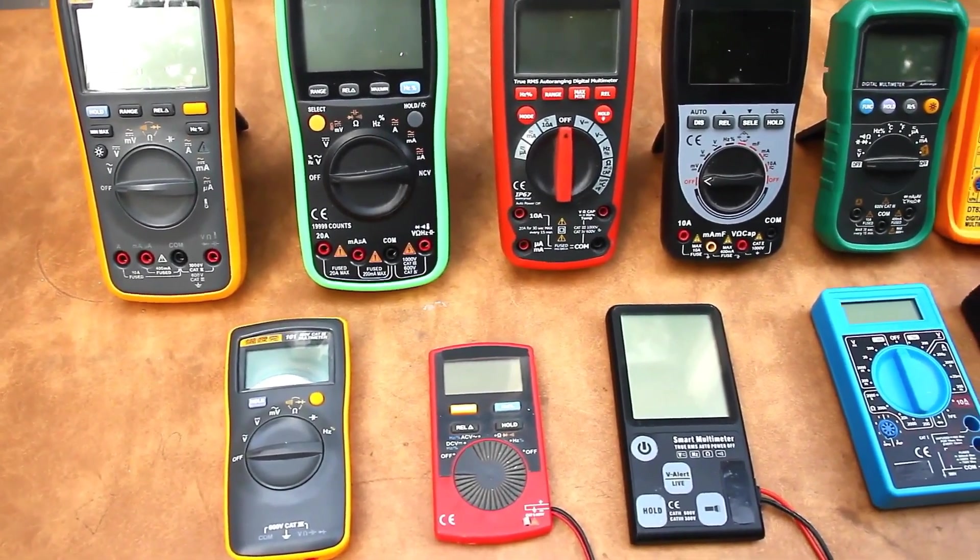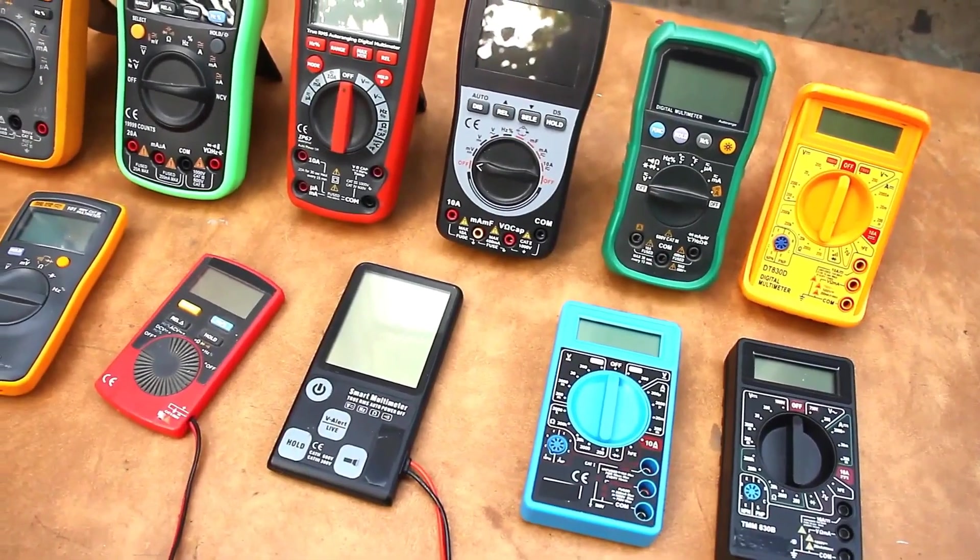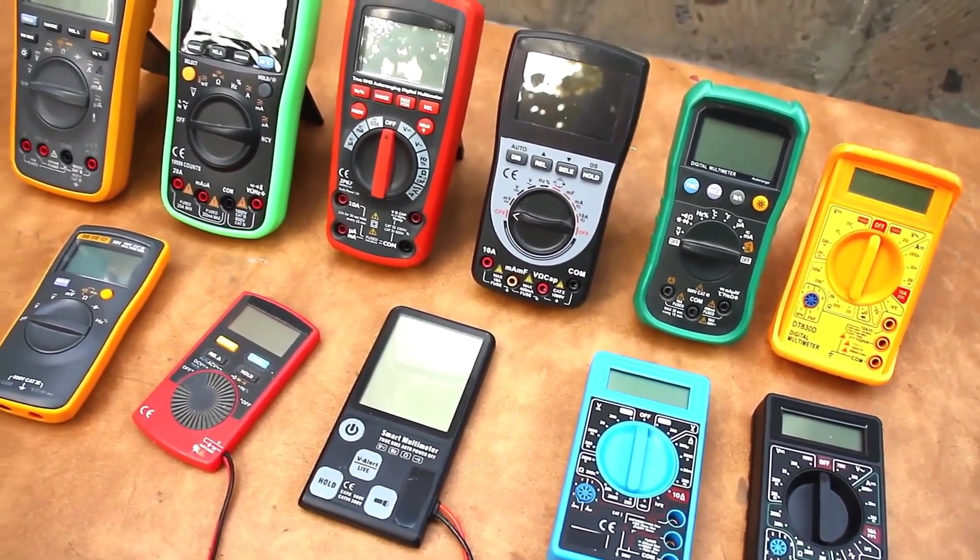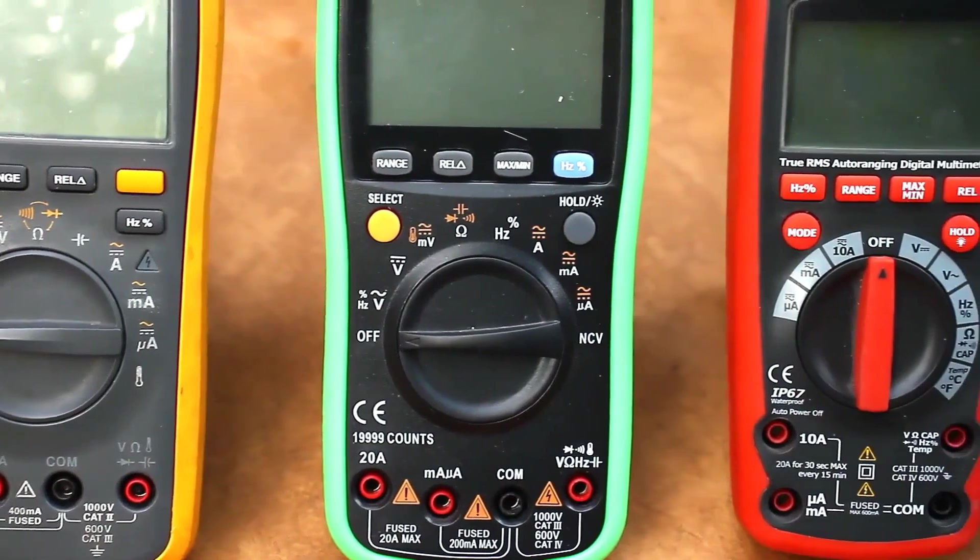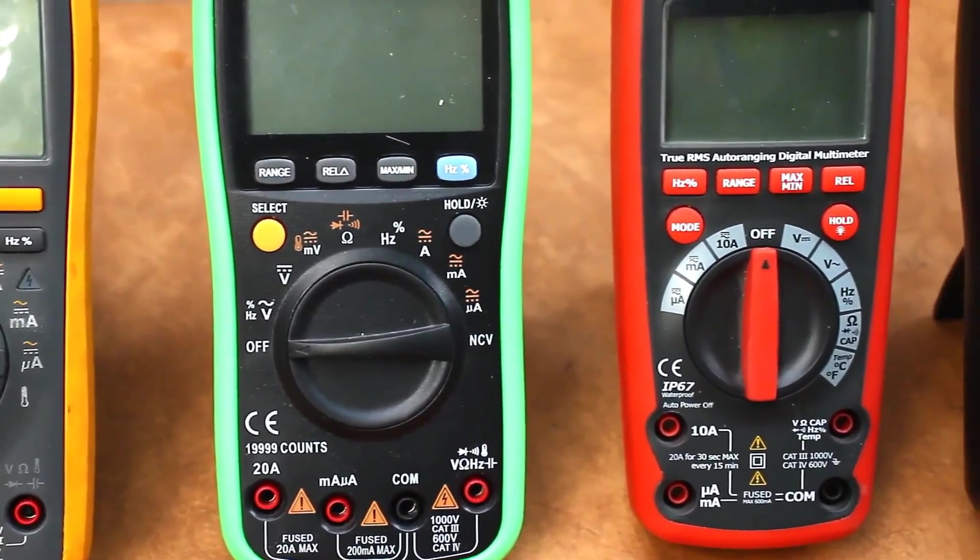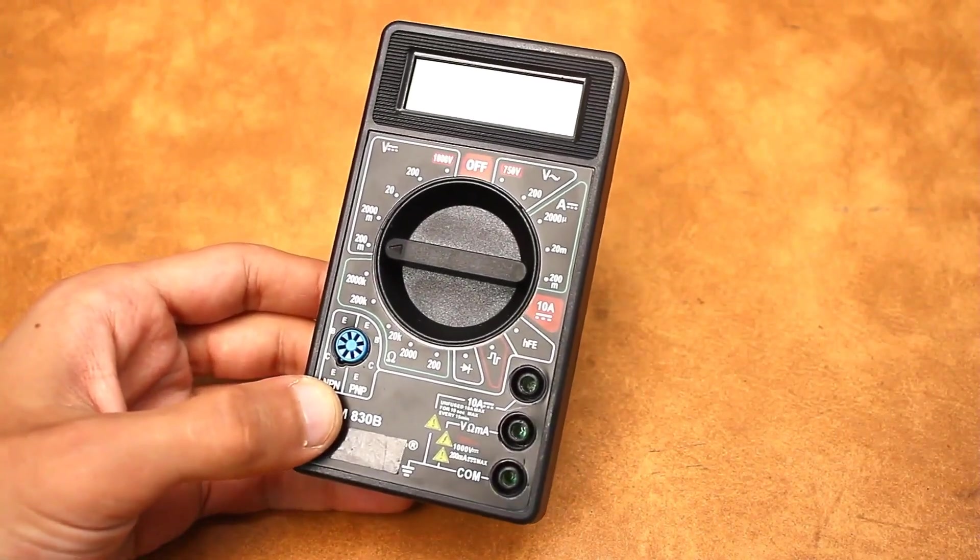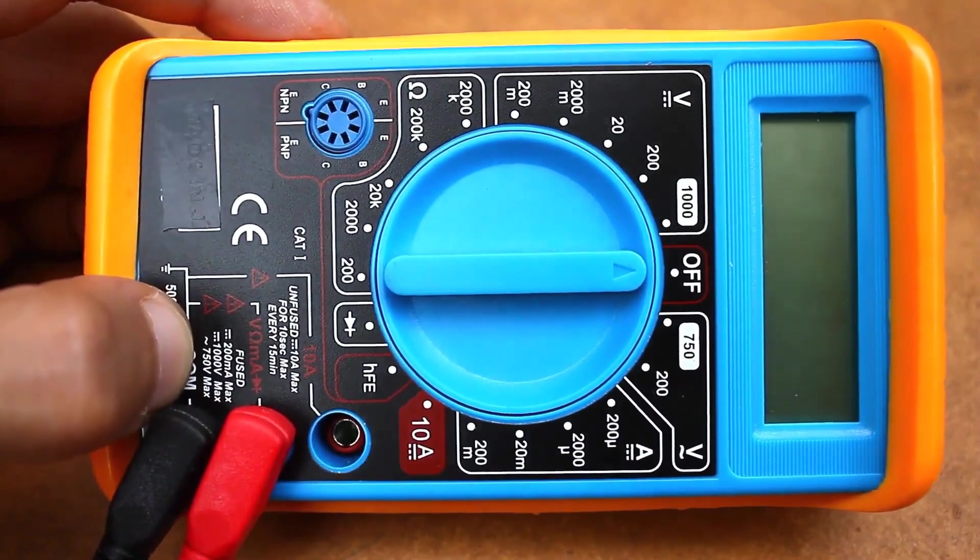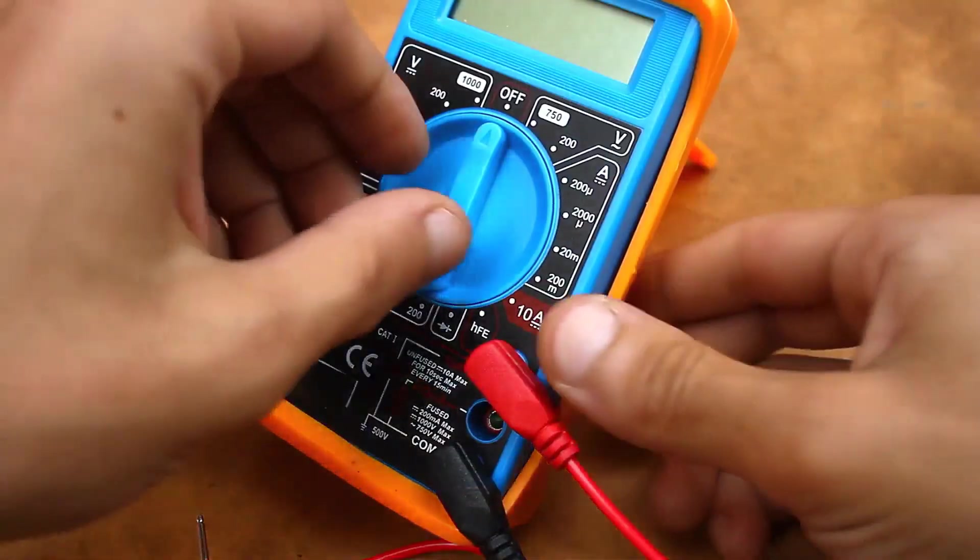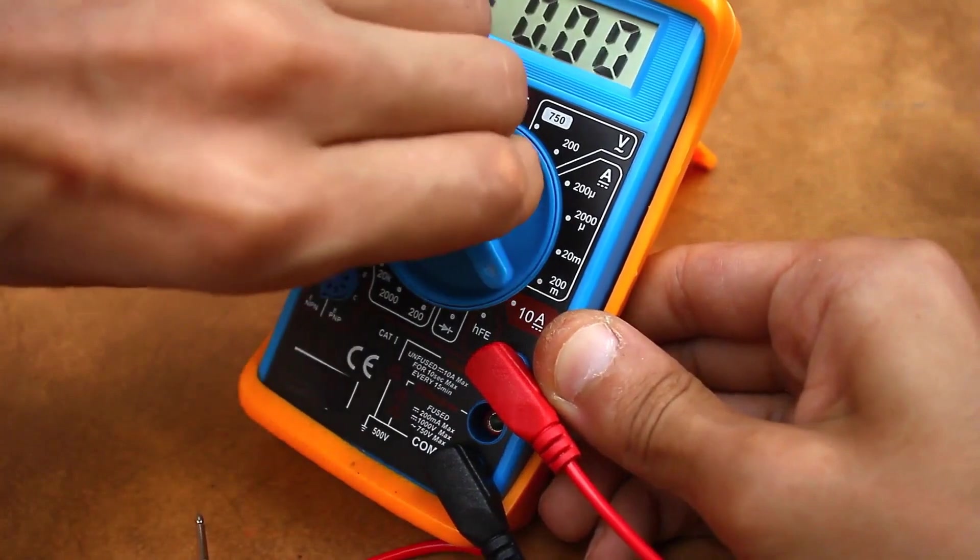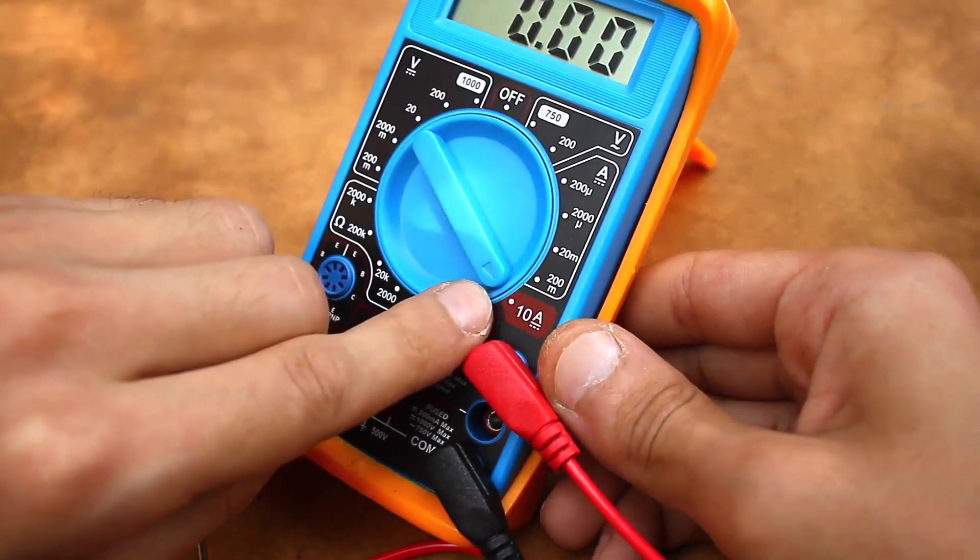Portable multimeters are quite useful devices, and you don't have to be an electrician to have a multimeter at home. A multimeter is a combined device for measuring electrical quantities. Standard budget multimeters can measure all popular electrical quantities, such as AC, DC voltage, current, resistance, and determine the continuity of circuits and connections using a continuity test.